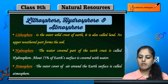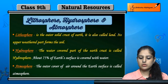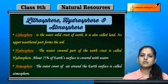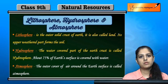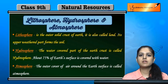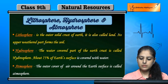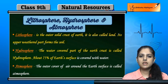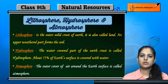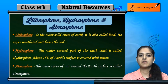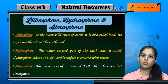The water-covered part of the earth's crust is called the hydrosphere. The earth has a land portion and a water portion. The 75% area of the earth is covered with water, and 25% is land.